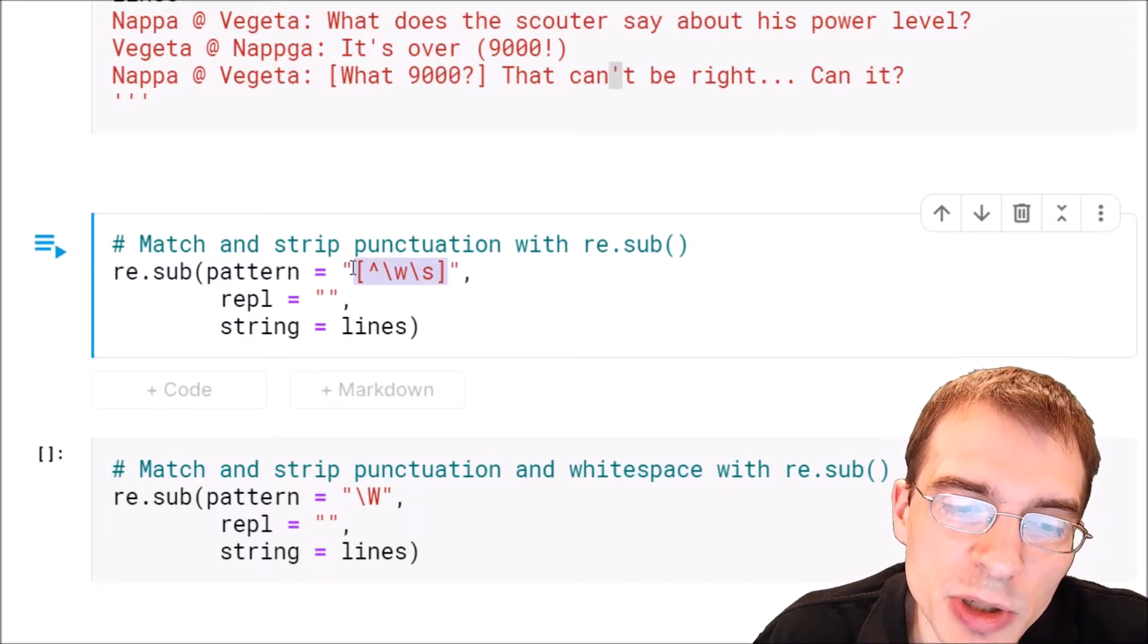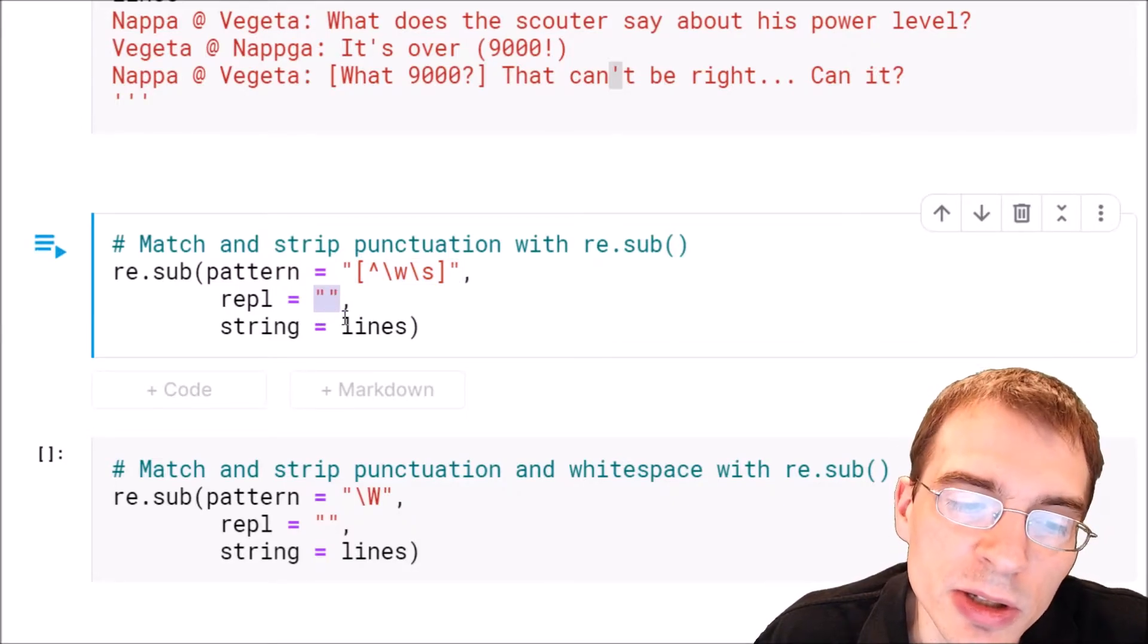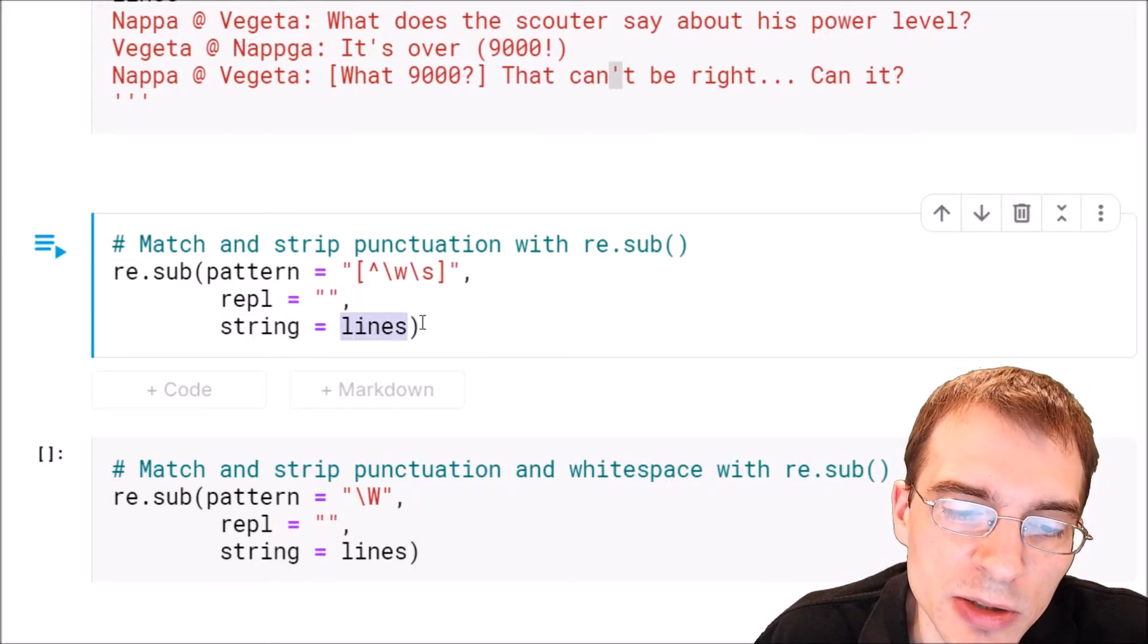And we're going to take all those punctuations that are matched and replace them, so repl will be equal to the empty string. So it's finding all the punctuation, replacing them with empty strings, basically just deleting them. And then the last argument is just the string we're passing in, and we called that lines.